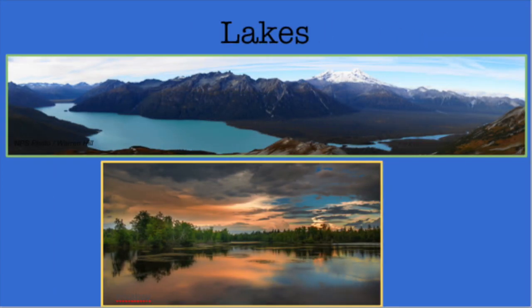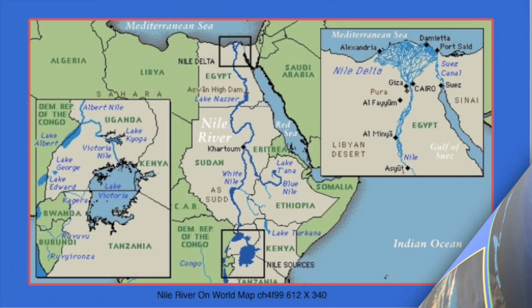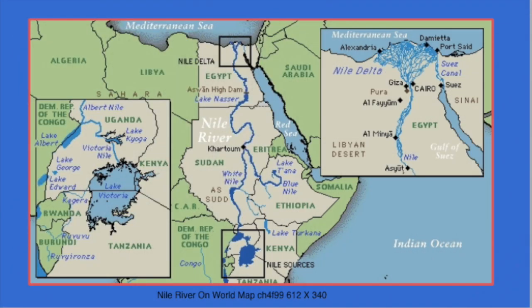Lakes are another major source of water for rivers. Some lakes have no outlet and are closed off so that the water cannot exit the lake. Other lakes are where a river starts — the Nile River in Africa starts at Lake Victoria.